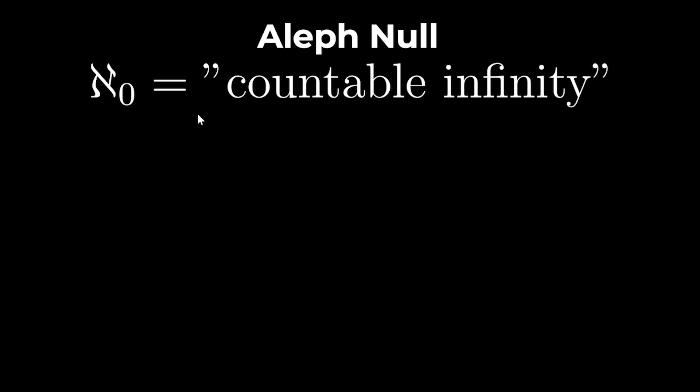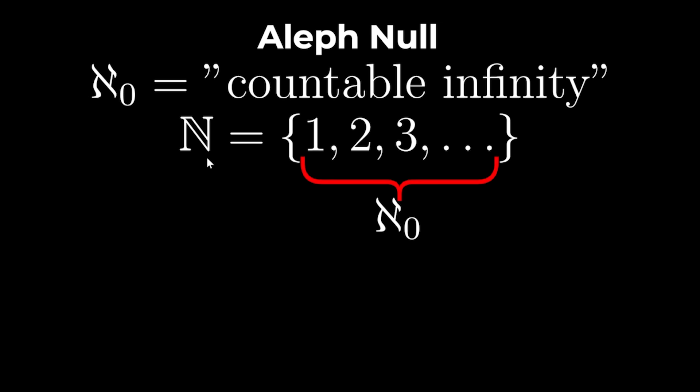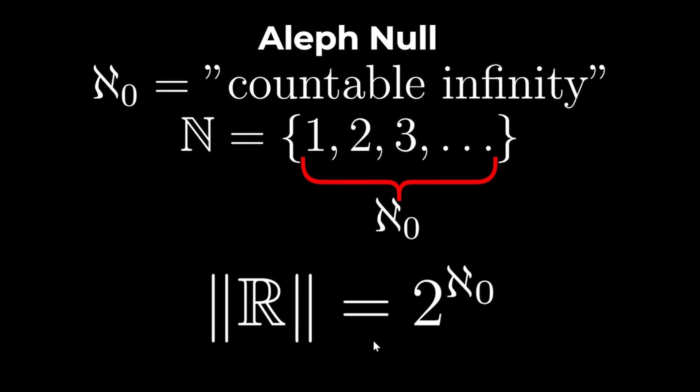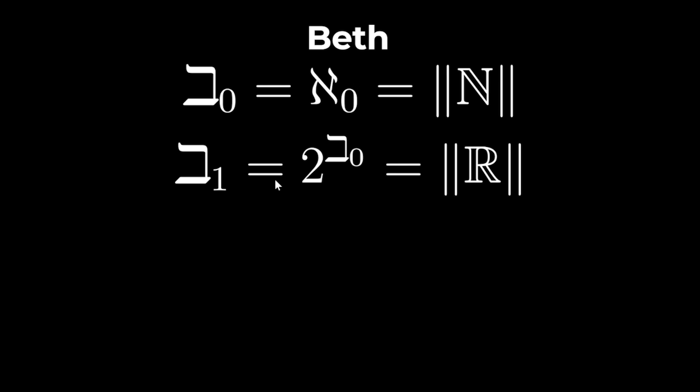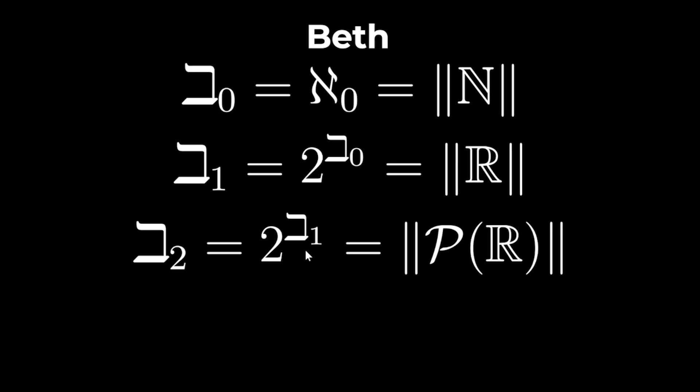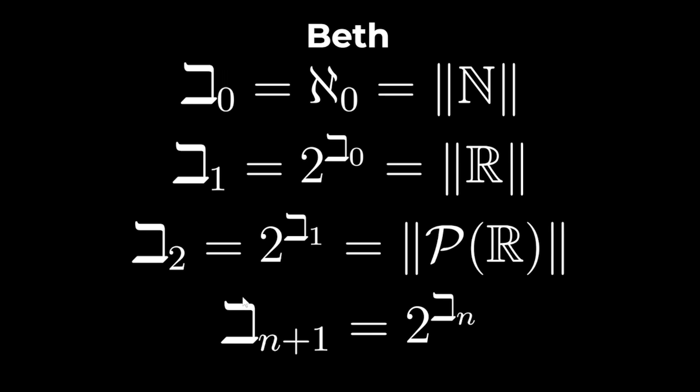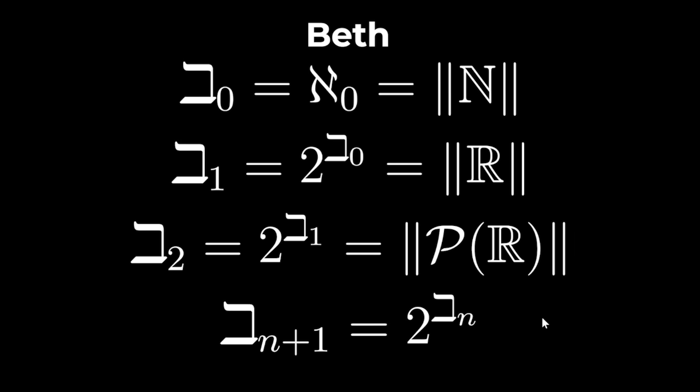Aleph Null is the smallest countable infinity, and it's equal to the size of the set of natural numbers. The size of the set of real numbers is 2 to the power of Aleph Null. Beth Null equals Aleph Null, which is the size of the set of natural numbers. Beth 1 equals 2 to the power Beth Null, which is the size of the set of real numbers. And Beth 2 equals 2 to the power Beth 1, which is the size of the power set of the real numbers. So in general, Beth N plus 1 equals 2 to the Beth N.